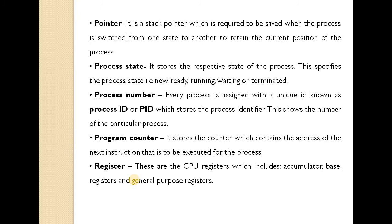The next field is registers. These are the CPU registers which include the accumulator, base registers, and general purpose registers. When a program is being executed, values are stored in different CPU registers, and the values of these CPU registers are maintained in this register field of the process control block.